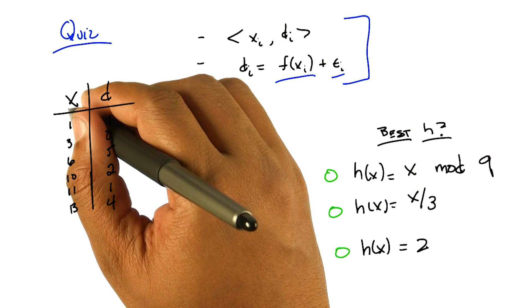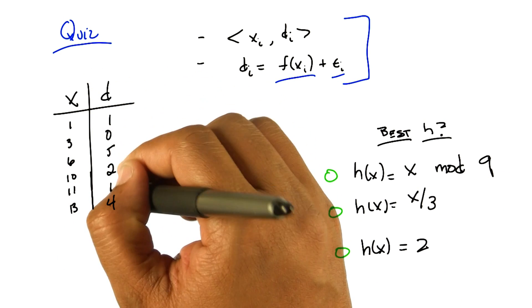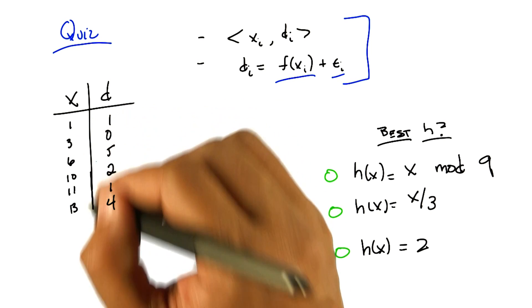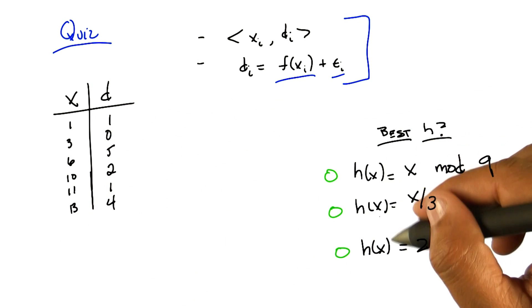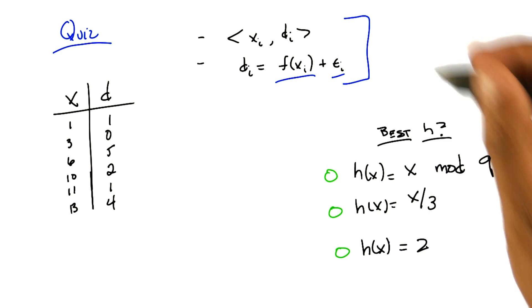Here's your training data. You've got a bunch of x's and a bunch of d's. These are the values that you have to learn. And I want you to tell me which of these three functions over here, these three hypotheses, is the best one under this assumption. Got it?